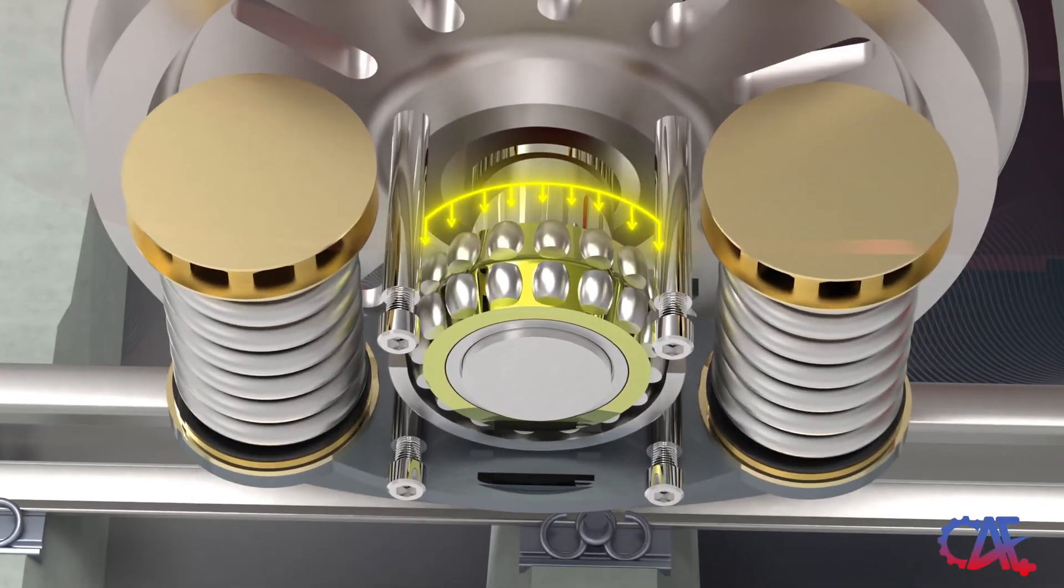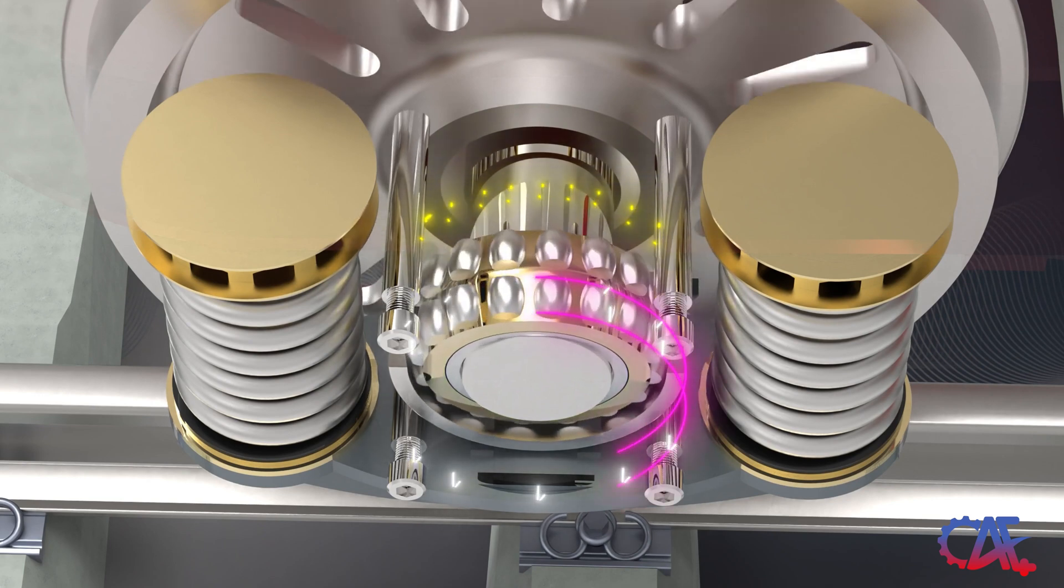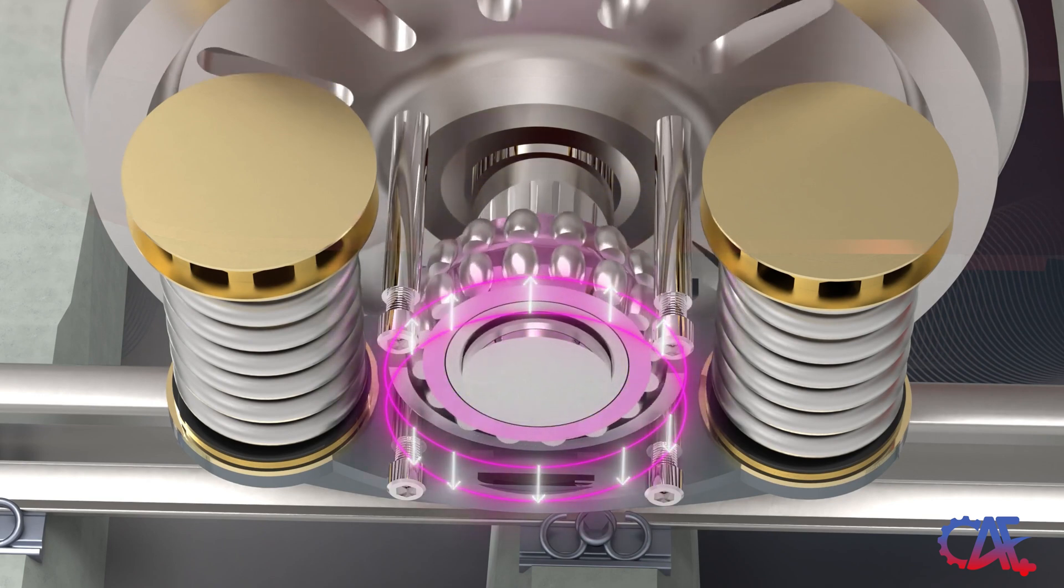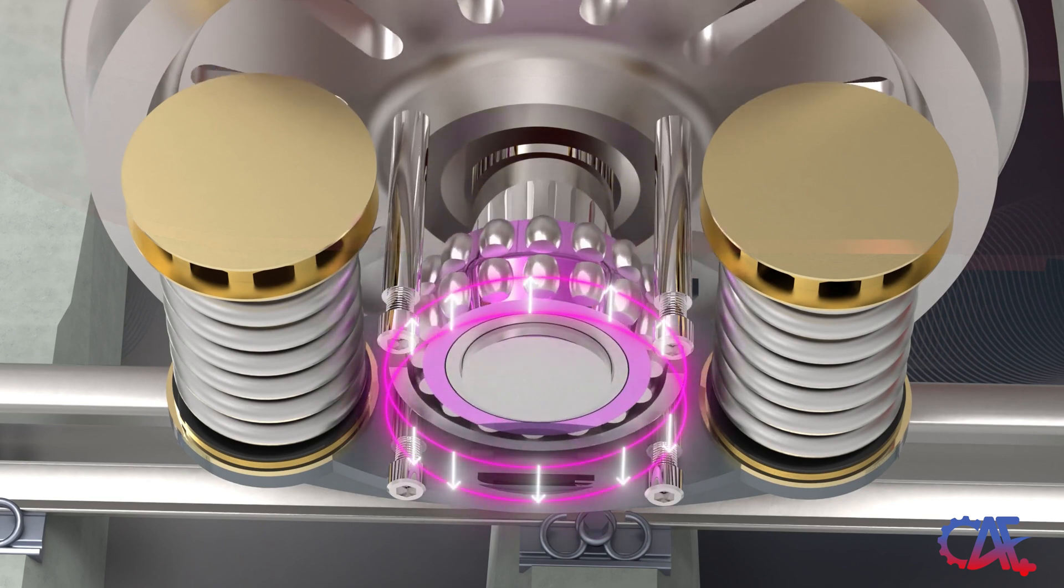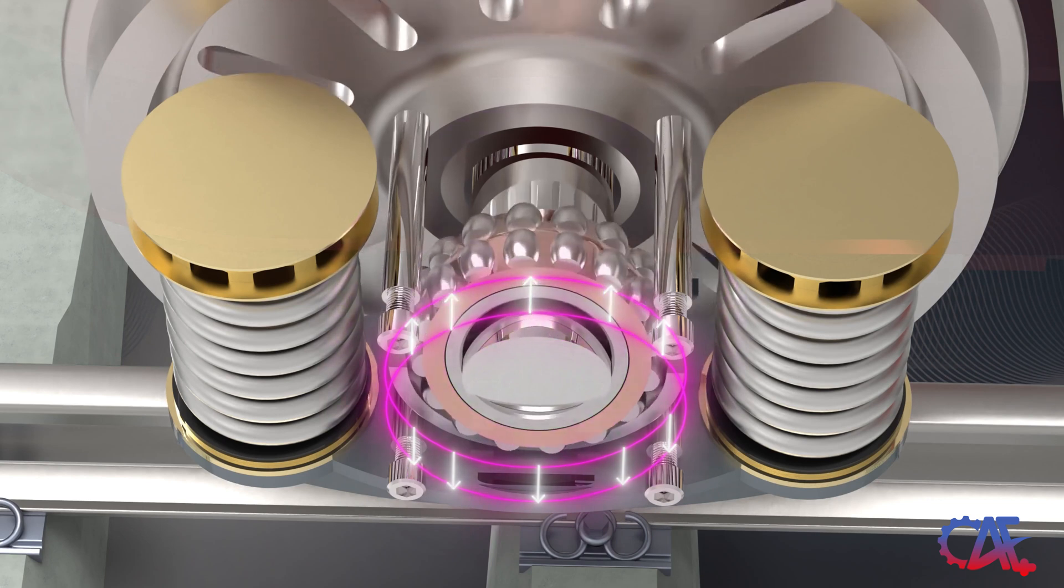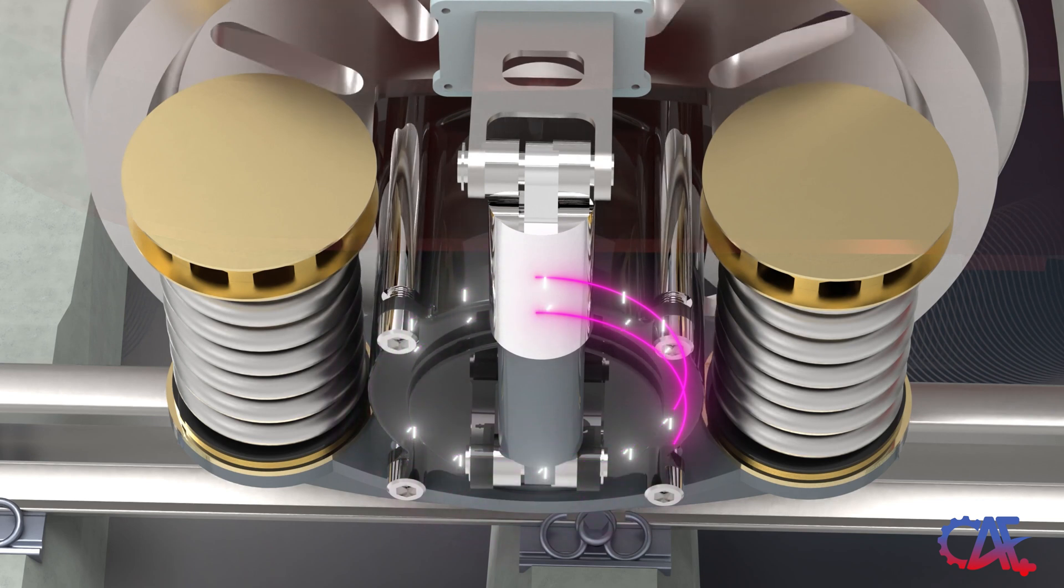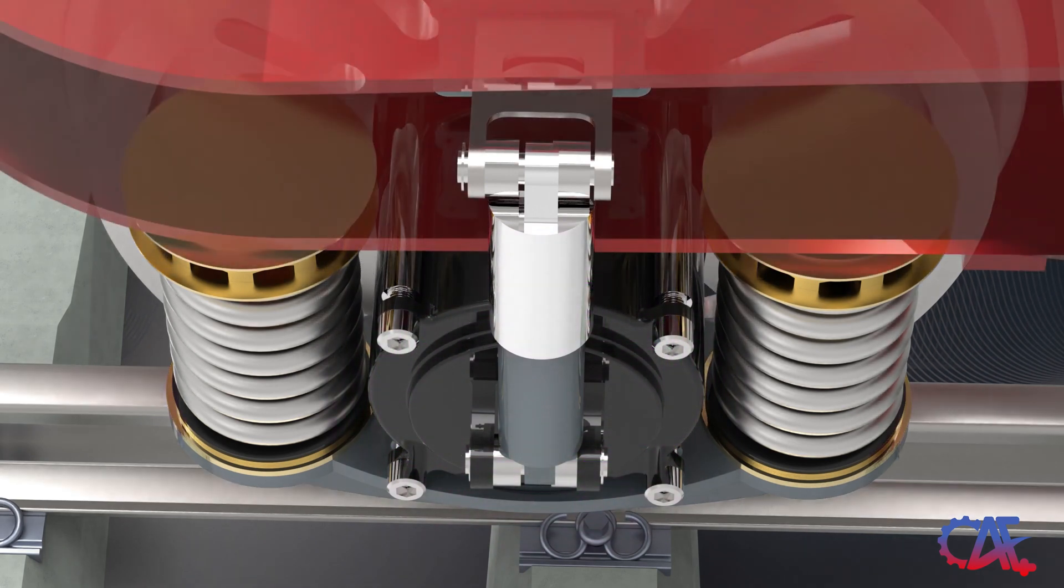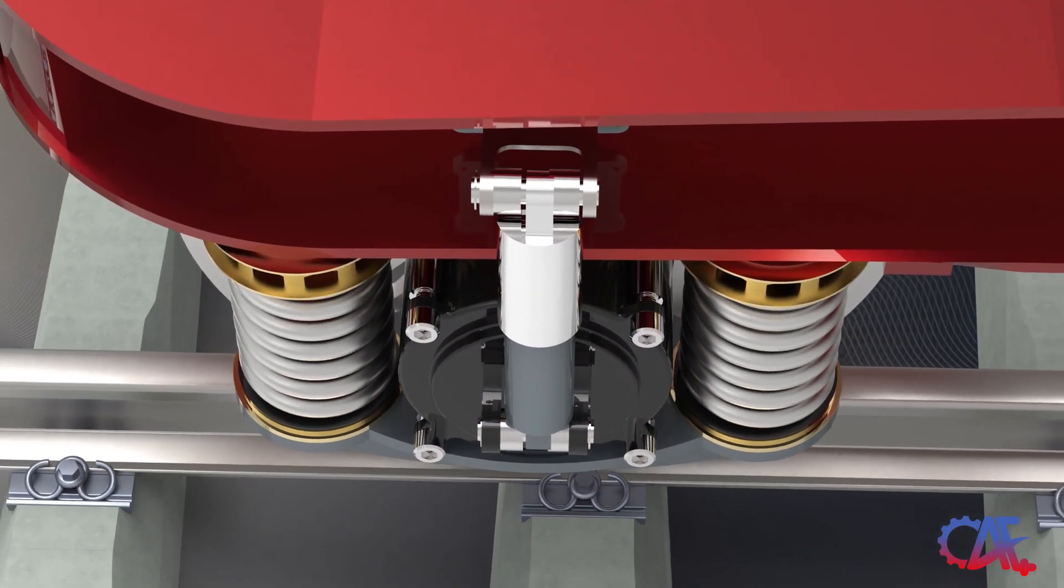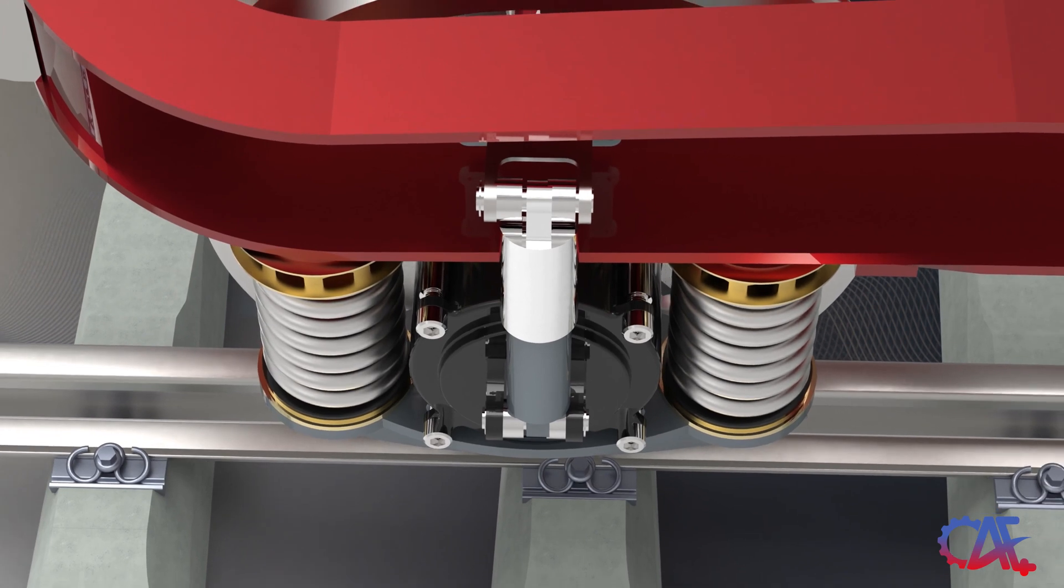In addition to axial and radial loads, these bearings also experience moment loads. Such moment loads can lead to misalignment between the shaft and the bearing's outer ring. As illustrated in the animation, the self-aligning nature of spherical roller bearings makes them an ideal choice for scenarios where shaft misalignment is likely.